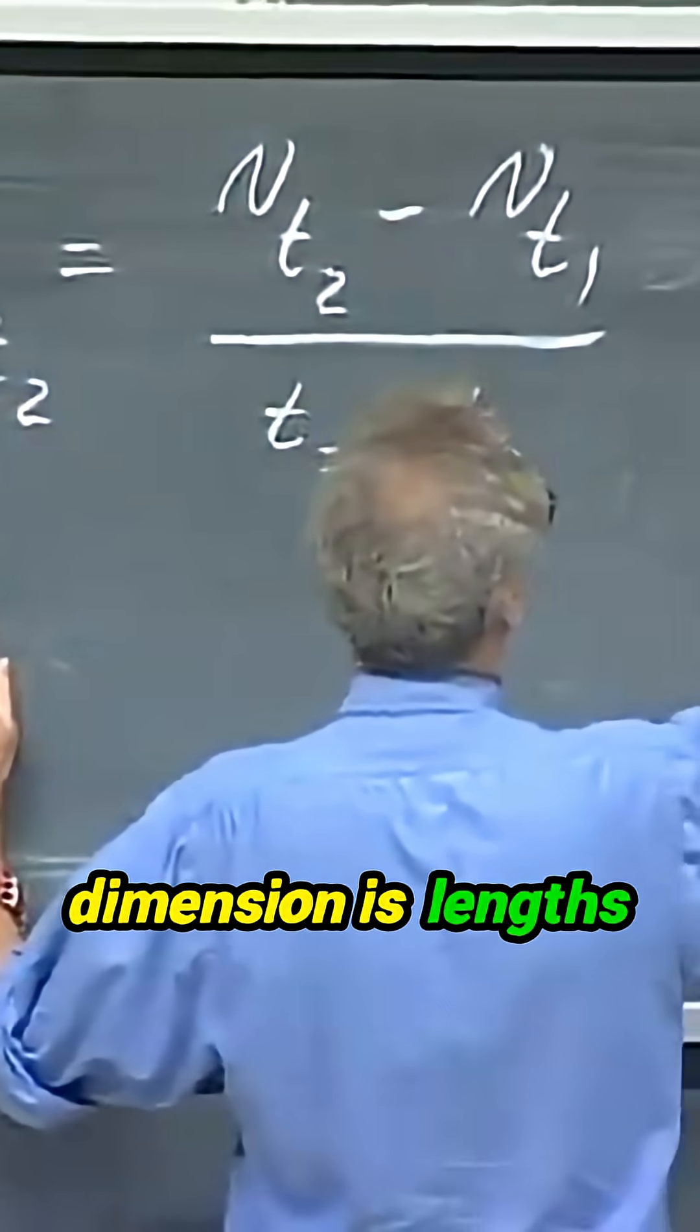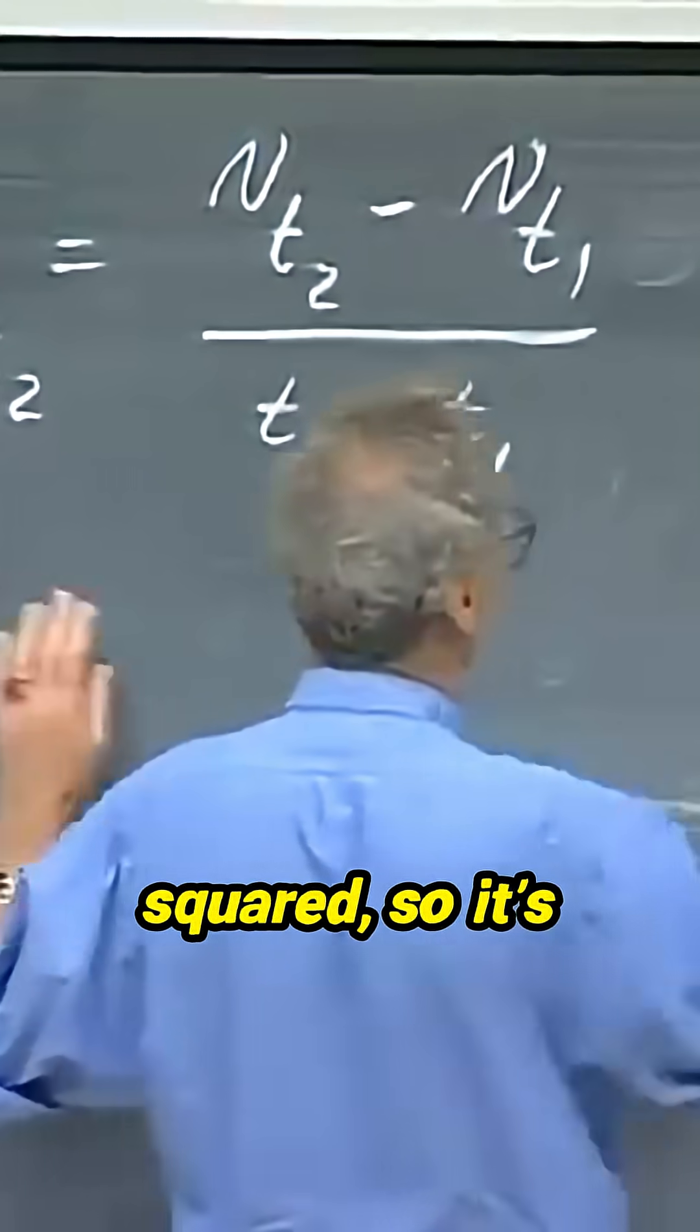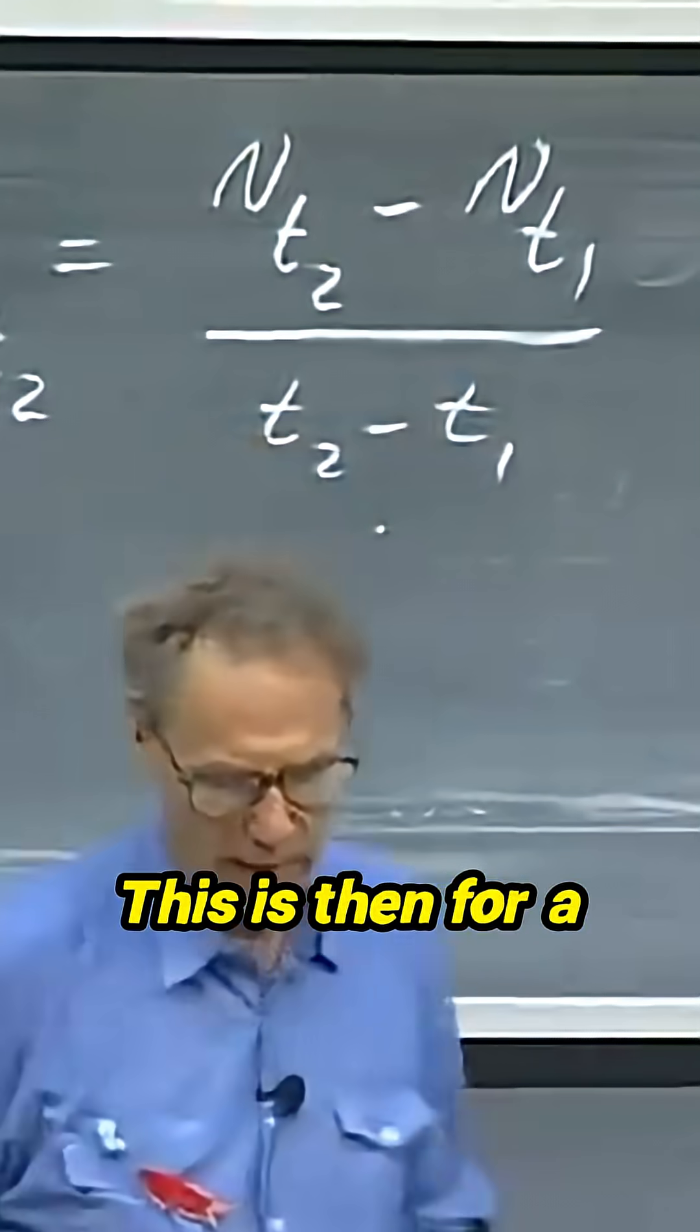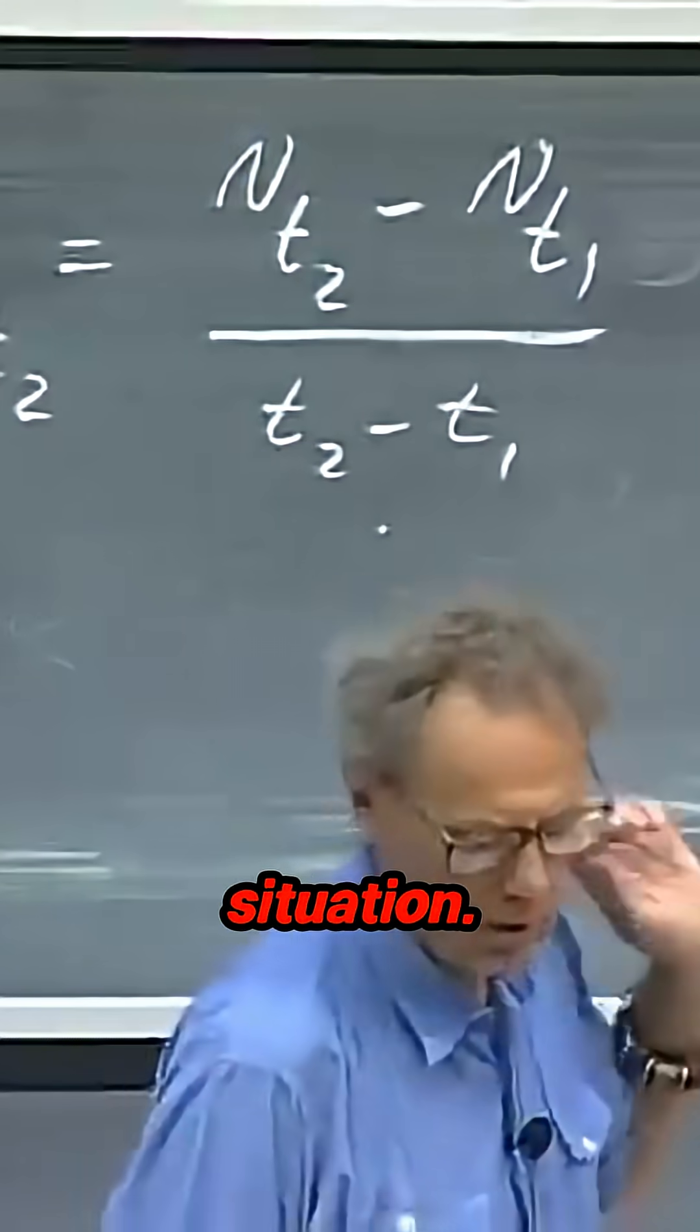And the dimension is lengths per second per time squared, so it's meters per second squared. This is then for a one-dimensional situation.